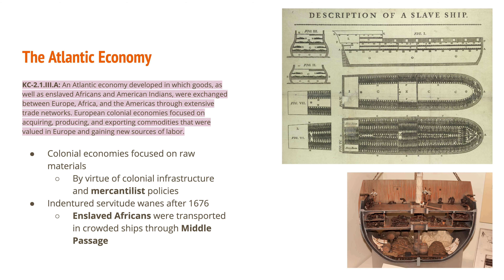The way this Atlantic economy developed — with colonial economies focusing on raw materials — was part of a larger plan from the European powers: to put in place a mercantilist system. The mercantilist system said a country must export more goods than it imports. England was using the colonies as a place to get raw materials for exports sent to other European countries. Indentured servitude begins to wane after 1676, due to Bacon's Rebellion.